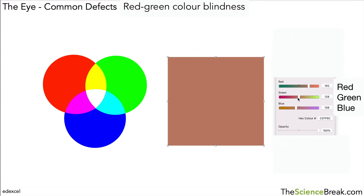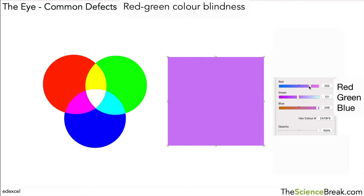Including changing the intensity by changing the opacity. So we can pretty much get any colour as a mixture of red, green and blue at different intensities. So that's how that works.